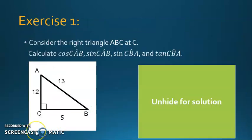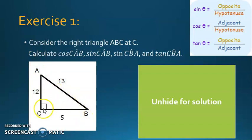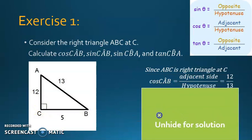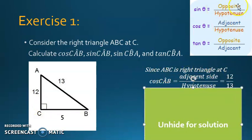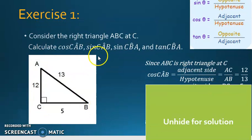Application — Exercise 1: Consider the right triangle ABC at C, given the length of all sides. Calculate cosine CAB. To calculate cosine A, it's adjacent side over hypotenuse. The adjacent side of A is AC, and the hypotenuse is AB since it's facing the right angle. So first, state that ABC is right at C to be able to use these rules. Cosine CAB is adjacent over hypotenuse, so it's AC over AB, which is 12 over 13.